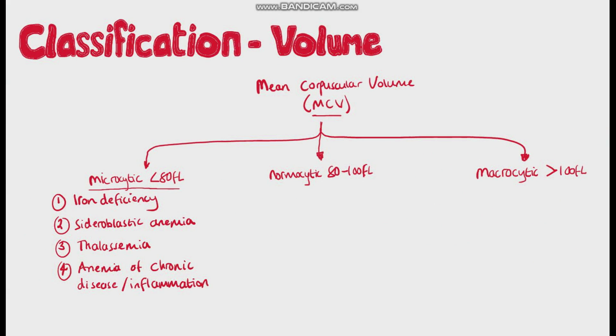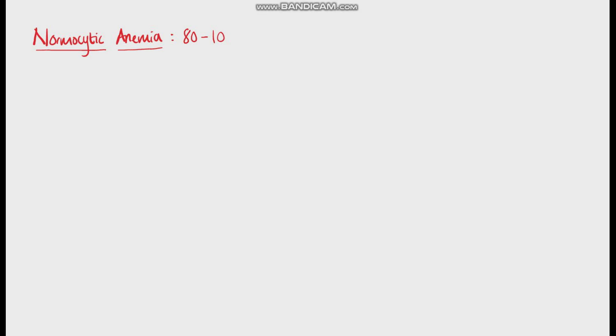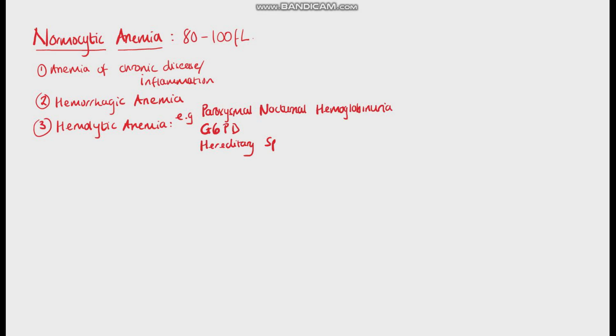Now let's look at normocytic anemia. So the MCV here is between 80 and 100 femtoliters, like we said. Included in this category are the anemia of chronic inflammation, hemorrhagic anemia, hemolytic anemias like paroxysmal nocturnal hemoglobinuria, G6PD, hereditary spherocytosis, diffuse intravascular coagulopathy. Again, I'll go into details on these in the hemolytic anemia video.